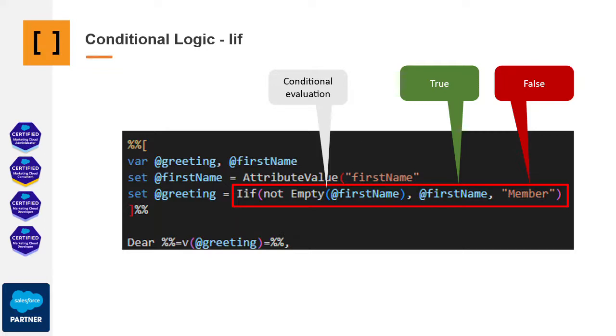In this example, we're telling it that if first name isn't empty, it should assign the value of first name to the greeting variable, given that it's not empty. If it is empty, we use a generic value, which is member. As you can see, the structure follows a simple pattern: first, an evaluation, followed by assignment in the case of a true evaluation, and assignment in the case of a false evaluation of the condition. It's as straightforward as that.